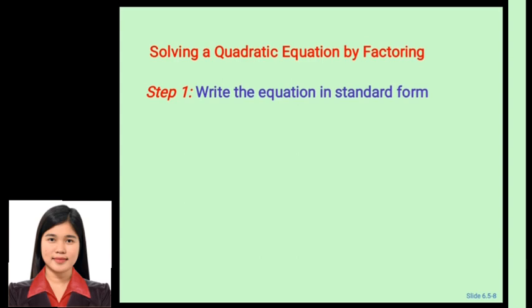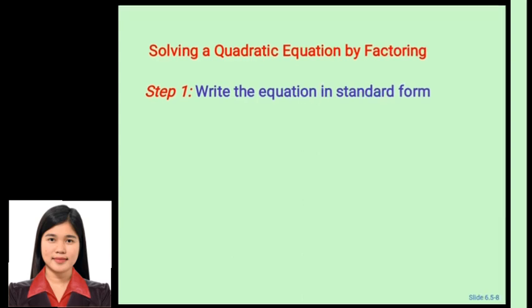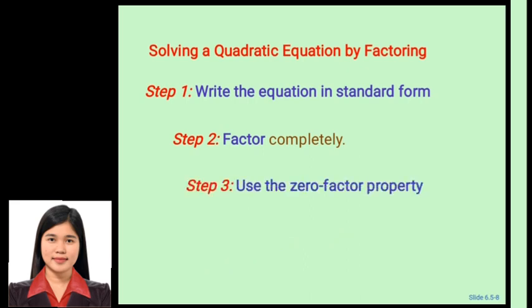The steps in solving a quadratic equation by factoring are: Step 1, write the equation in standard form — ax² plus bx plus c equals 0, with all terms on one side in descending power of the variable and 0 on the other side. Step 2, factor completely. Step 3, use the zero factor property to set each factor with a variable equal to 0 and solve. Step 4, check each solution in the original equation.